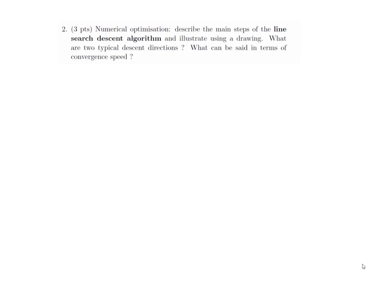Here is the second theoretical question: describe the main steps of the line search descent algorithm and illustrate using a drawing what are two typical descent directions and what can be said in terms of convergence speed. This is covered by the overall course and will not be covered in this video.